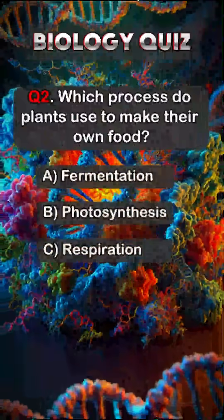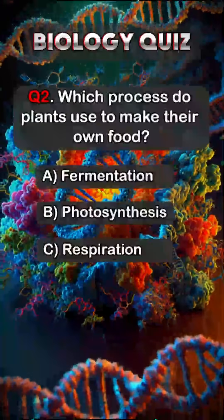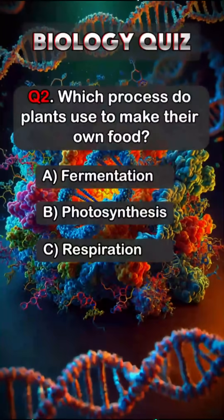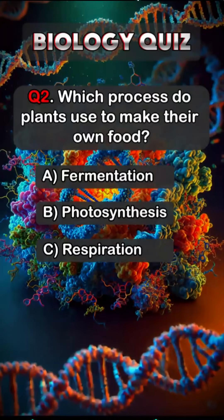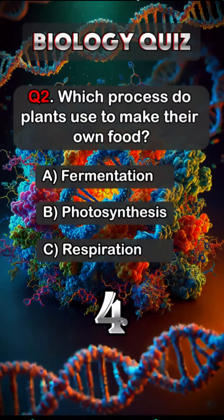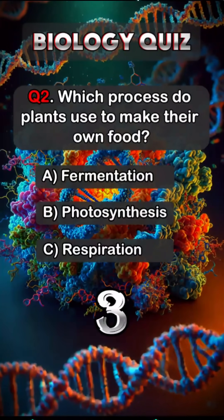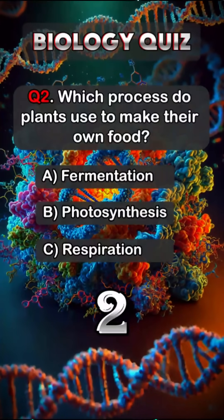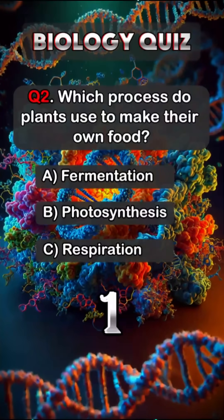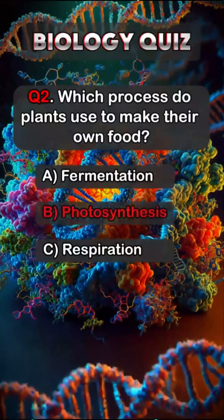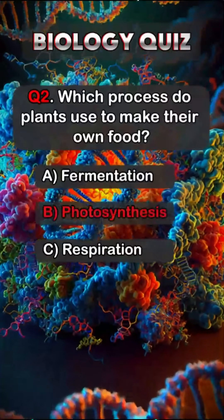Question 2. Which process do plants use to make their own food? Answer B. Photosynthesis.